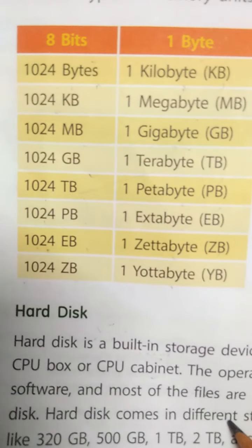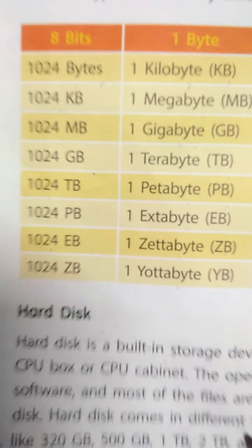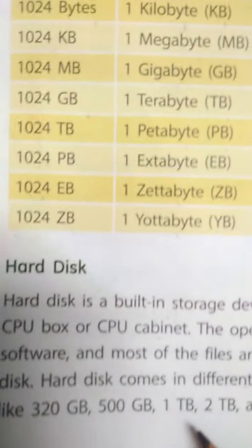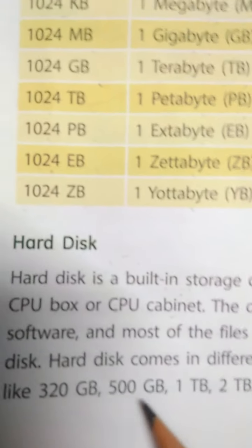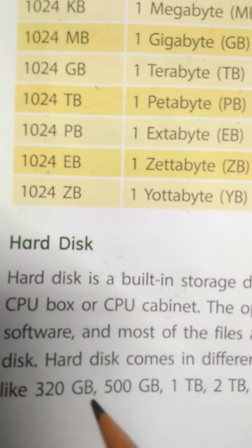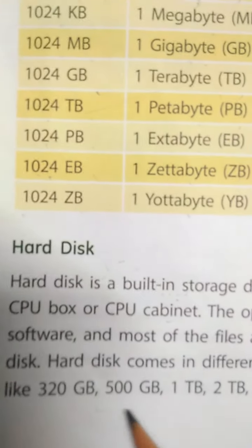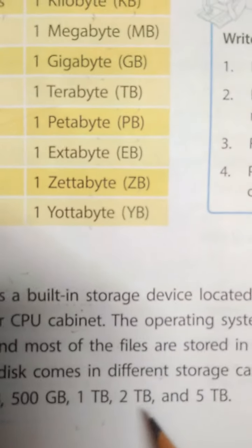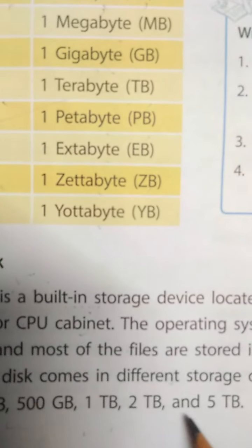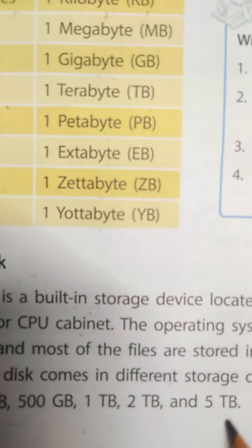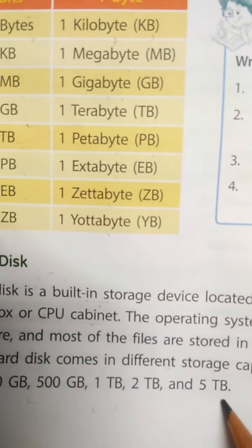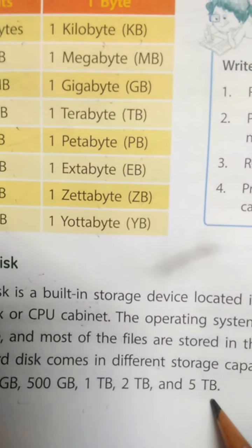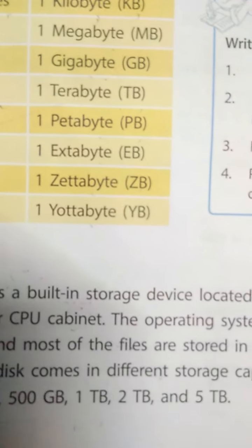A hard disk comes in different storage capacities, like 320 GB, 500 GB, 1 TB, 2 TB, and 5 TB. So students, thank you very much, have a nice day.